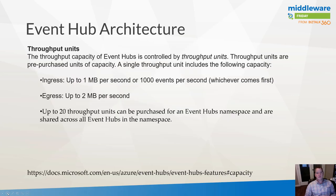An important concept in the Azure Event Hubs architecture is throughput units. The throughput capacity of an Event Hub is controlled by throughput units, which are pre-purchased units of capacity. A single throughput unit includes the ability to ingress up to one megabyte per second or one thousand events per second, whichever comes first. That distinction matters — with smaller events you can process more of them than with larger events.